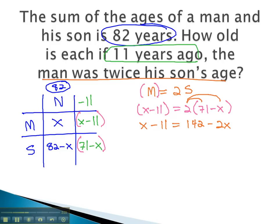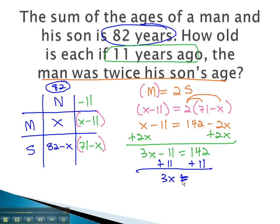Finally, get the variable to one side by adding 2x to both. 3x minus 11 equals 142. Adding 11 to both sides gives us 3x equals 153.